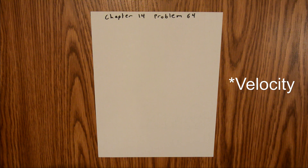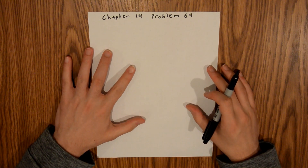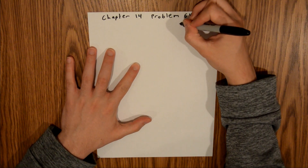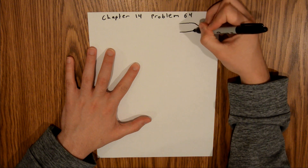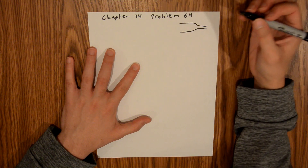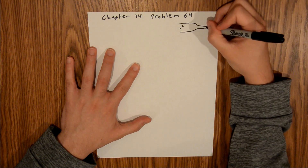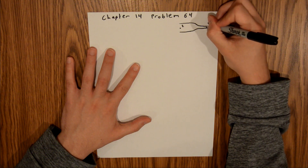Chapter 14 is all about fluids, and in Problem 64 we have a horizontal pipe with water flowing through it. We're asked to find the volume of water that flows out in a specified time period, and the speed and gauge pressure in one of the sections of the pipe. I'll draw a simplified version of the figure — a pipe with a contraction — and we'll call the narrowed section point 2, and just inside the tube will be point 1.